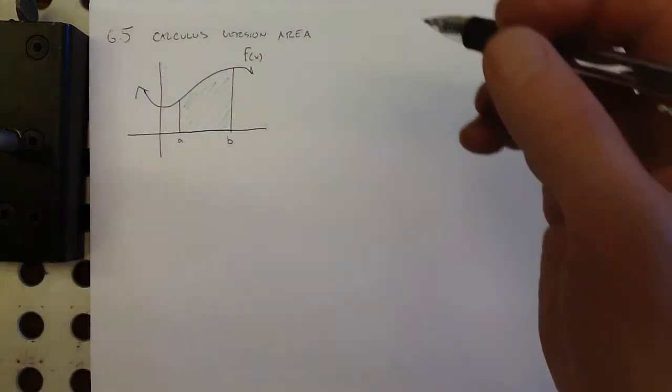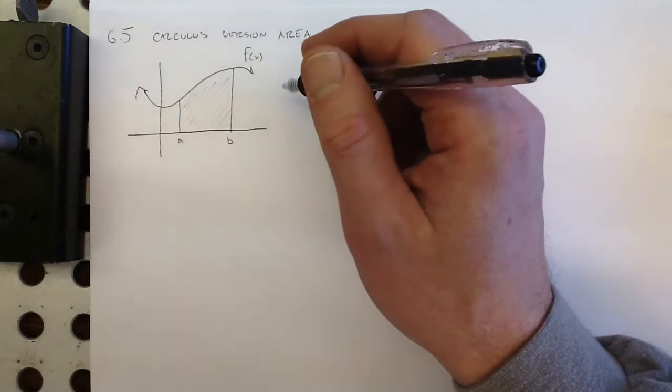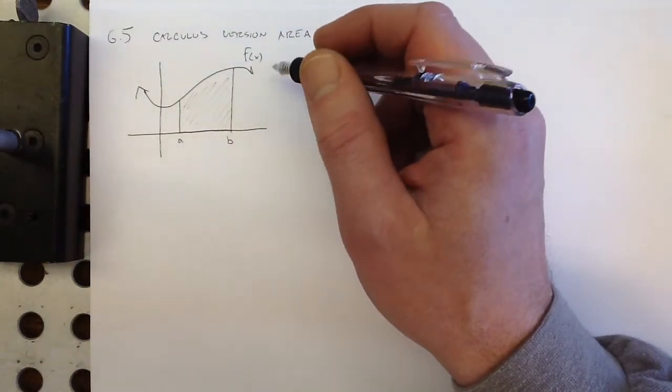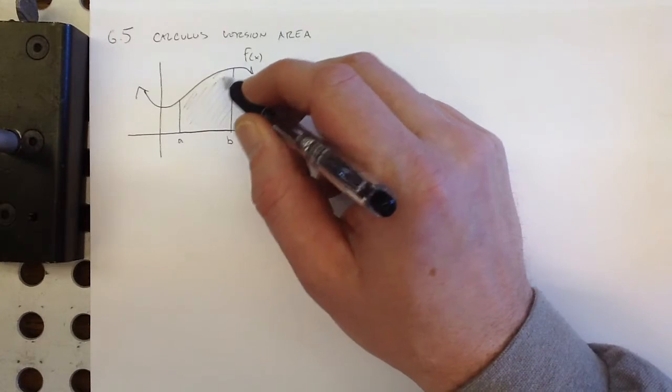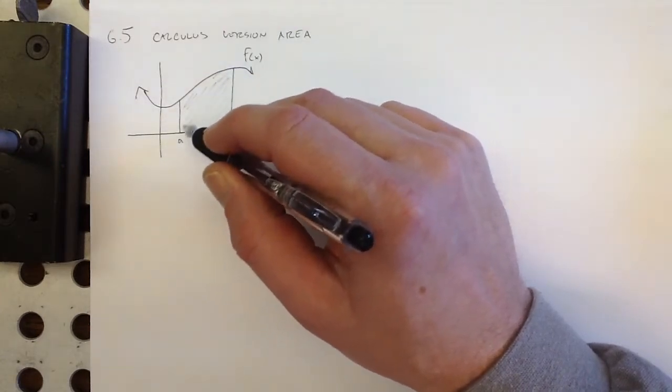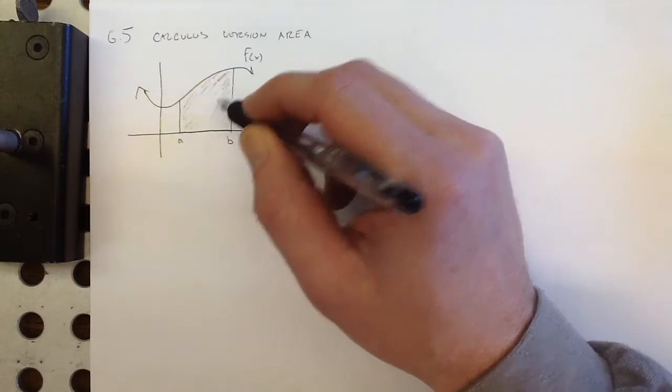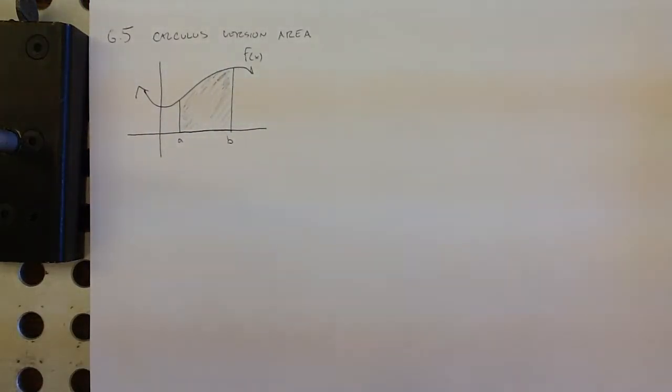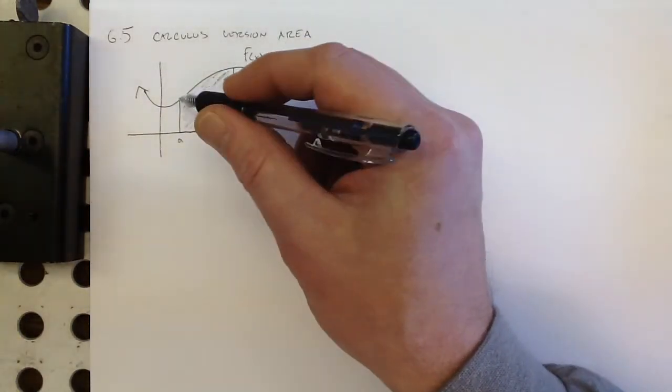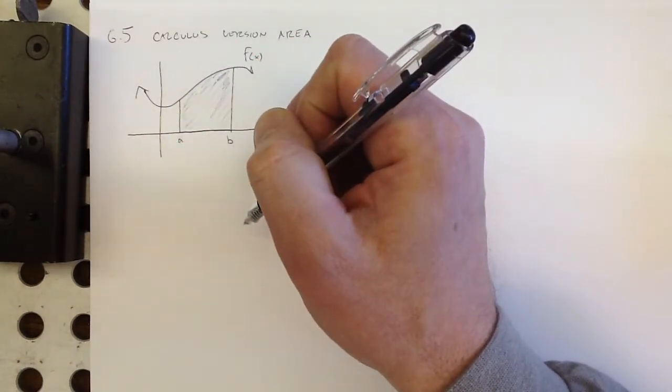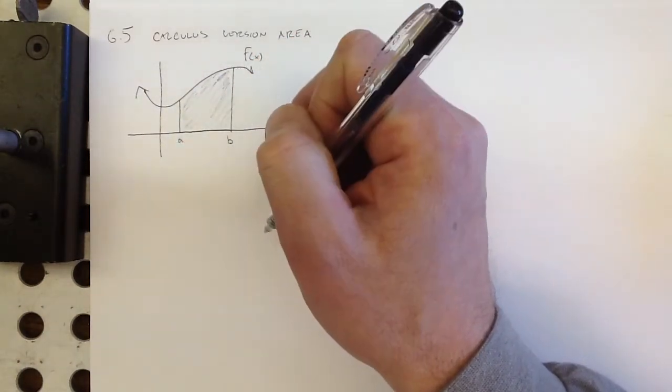And why would we be interested in that? That will reveal itself later in this chapter. But for now, we'll just accept that this is something we would like to be able to calculate. We're not going to get a whole lot of tools for calculating it yet, not in this section. Right now, we just want to define what exactly this is and how we should use notation to represent that.